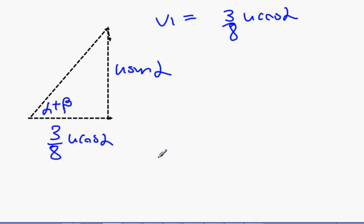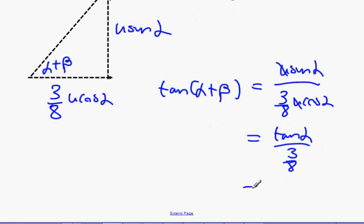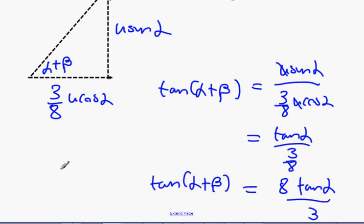So what we can now find out is that tan of alpha plus beta is going to be U sin alpha over three-eighths U cos alpha. The U's will cancel and we'll end up with tan alpha divided by three-eighths, which is 8 tan alpha over 3. So now we know that tan of alpha plus beta is 8 tan alpha over 3.